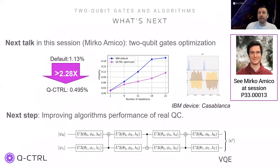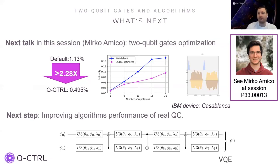So what's next? In the next talk, Mirko will show us an improvement of more than 2x that can be achieved with two qubit gates, which pose a much bigger challenge on real hardware compared to single qubit gates. Our next step is also to go beyond gates and use reinforcement learning and other black box optimization methods to improve the performance of small scale algorithms on real hardware. That's all for me. Please stay tuned for the next presentation.